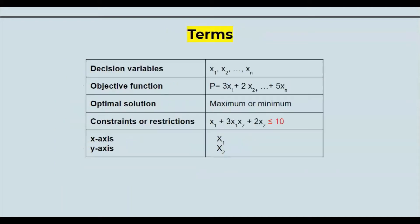The first part is the terms. Decision variables are x₁, x₂, etc. In this example, we'll only address x₁ and x₂. The objective function is some kind of equation with an equal sign — its purpose is to find the maximum or minimum value. Constraints or restrictions are identified by an inequality sign. For graphing, x₁ is used on the x-axis and x₂ on the y-axis.